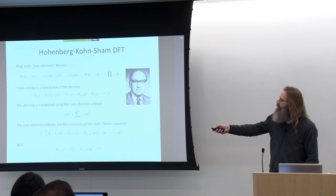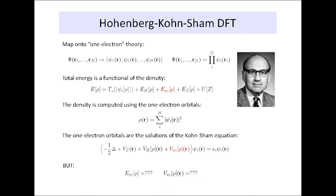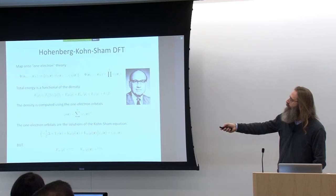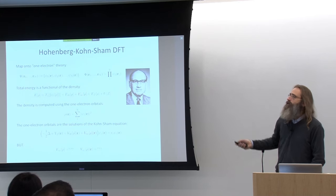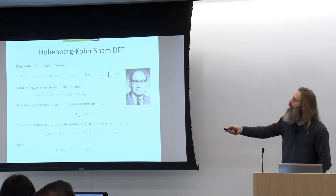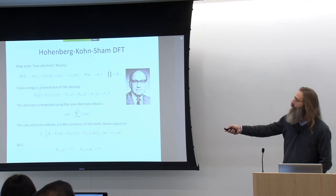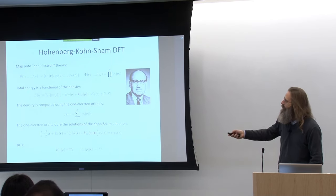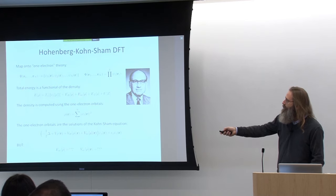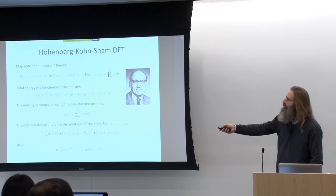They've shown we can write the total energy as a functional of the density, consisting of a few terms: a kinetic energy term derived from the one-electron orbitals, a Hartree energy (electrostatic energy depending on the density), the density interacting with the ions, the ions amongst each other, and everything we do not know about the system is lumped into an exchange-correlation energy contribution — also a functional of the density. They proved this exchange-correlation functional actually exists.